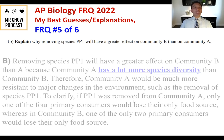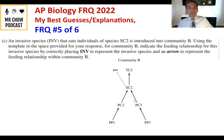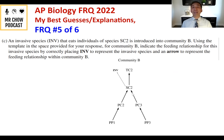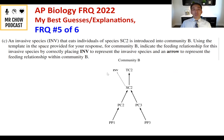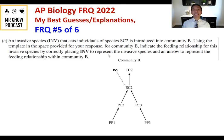Question 5C: An invasive species INV that eats SC2 is introduced into community B. Place INV in the food web with an arrow showing the feeding relationship. INV is placed with an arrow from SC2 to INV — energy flows to the invasive species. Because it's invasive with no natural predators, there's no arrow going away from INV, just toward it from SC2.